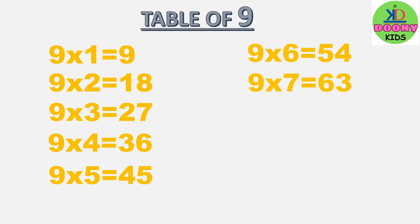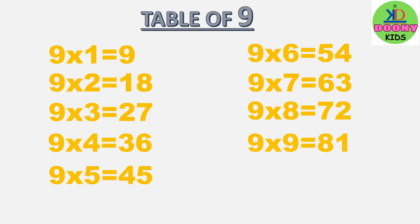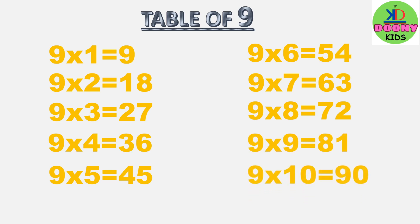9 sevens are 63, 9 eights are 72, 9 nines are 81, 9 tens are 90.